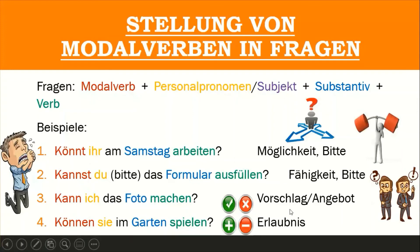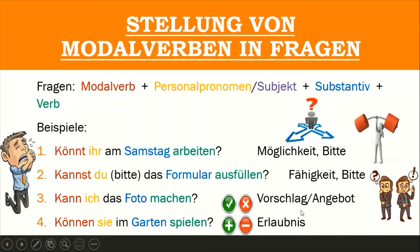Können can also show permission, which we call in German die Erlaubnis. For example, in the question: Können Sie im Garten spielen? Let's take the example that a woman has come to visit her friend with her kids. She has gone into the house and is talking with her friend inside, but she asks for permission from her friend if her kids can play in the garden. That is how Können shows permission.